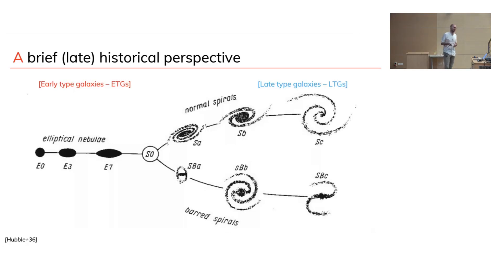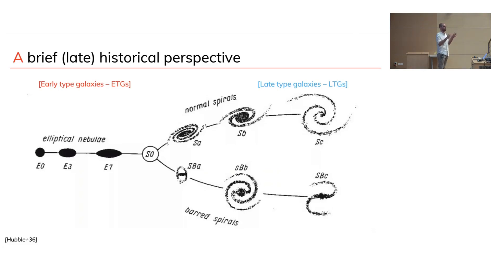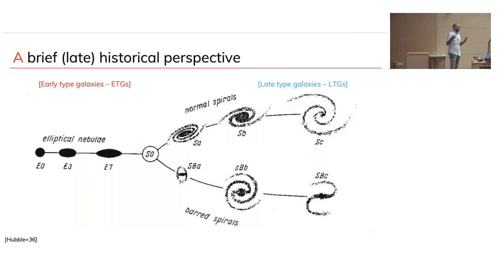The first thing any astronomer would do when seeing different shapes is to make sense of them and put them in categories. The easiest thing is to look at the shapes — the morphology. This is the very famous tuning fork diagram, published in the Atlas of Nebulae by Hubble, identifying elliptical galaxies — rounded, cigar-shaped — called early-type galaxies. Then there's a branch with spiral galaxies, called late-type galaxies. The original early/late classification implied some time evolution, which actually turned out to be the opposite of what was originally proposed.